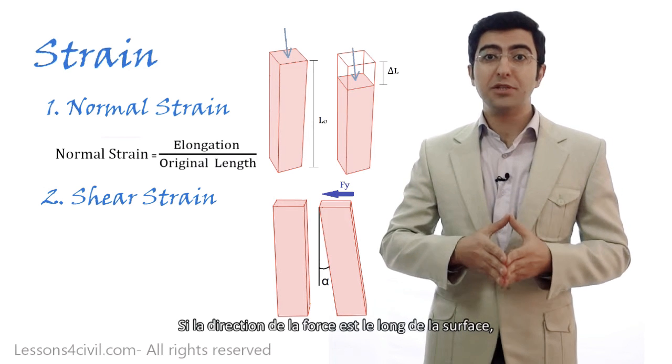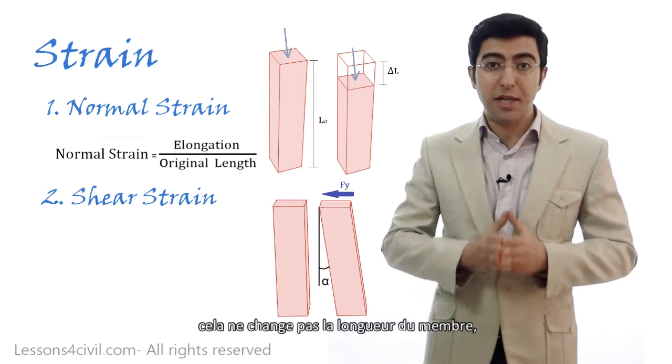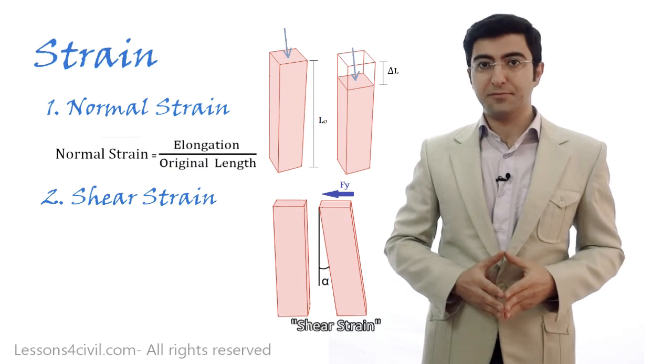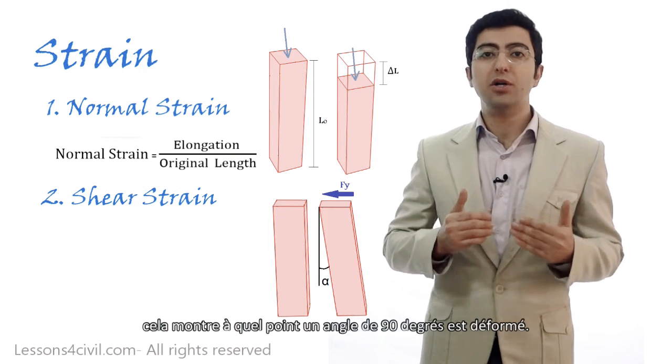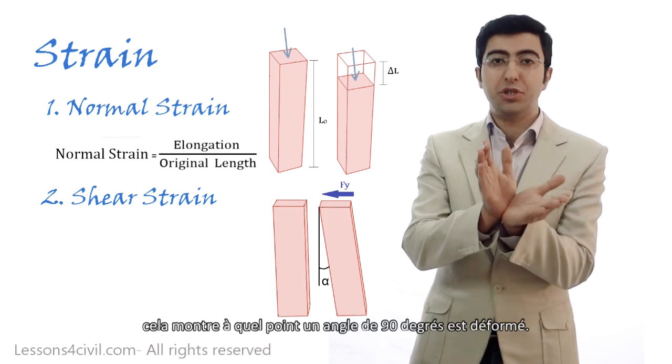Well, if the direction of the force is alongside the surface, it does not change the length of the member. Instead it changes the angles. Shear strain is an indicator of how much a 90 degree angle is going to deform because of the shear force.